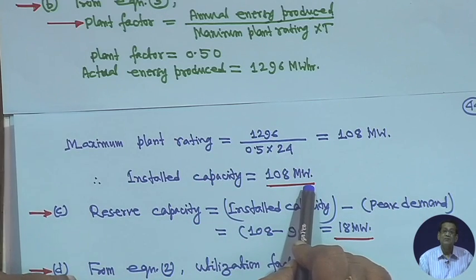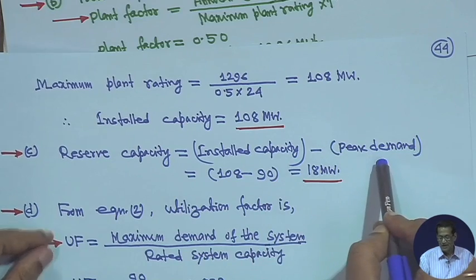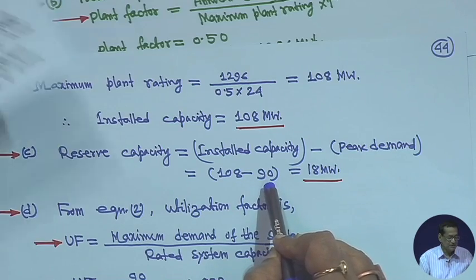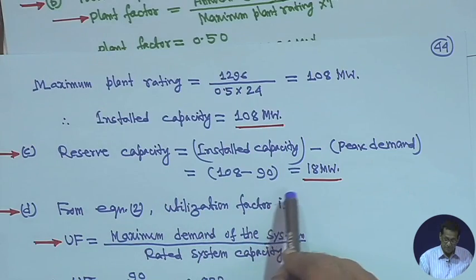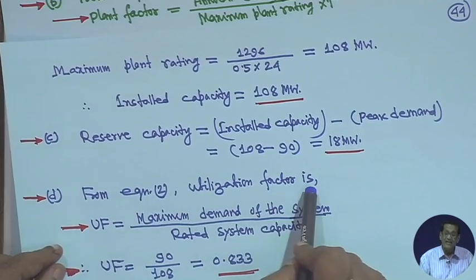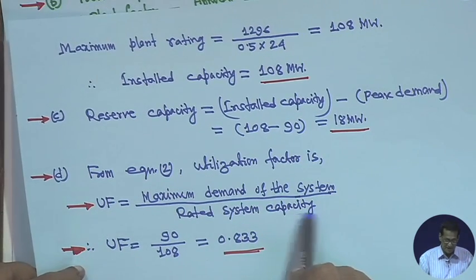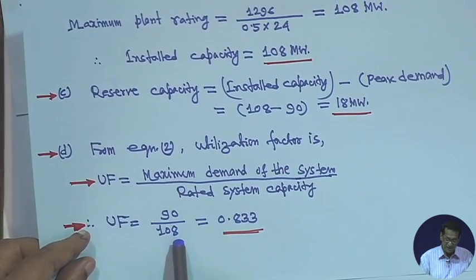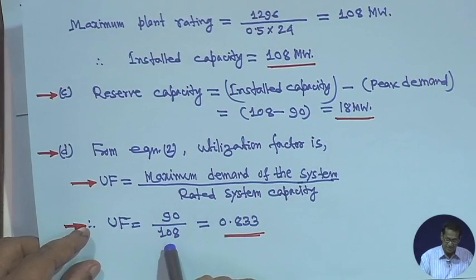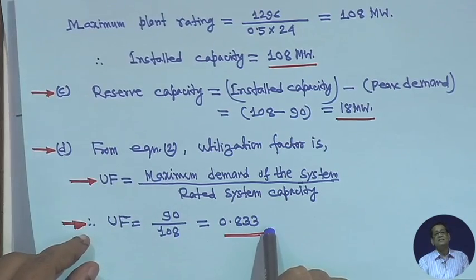Part (c): reserve capacity = installed capacity − peak demand = 108 − 90 = 18 MW. Part (d): utilization factor = maximum demand of the system / rated system capacity = 90 / 108 = 0.833.